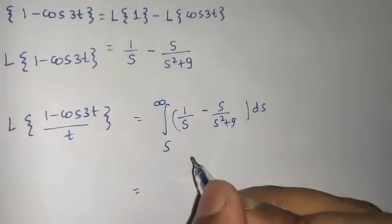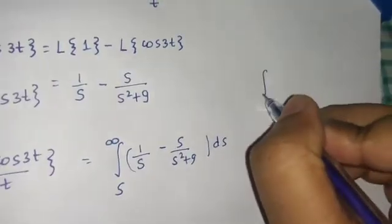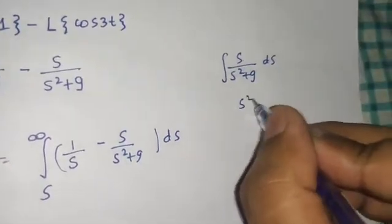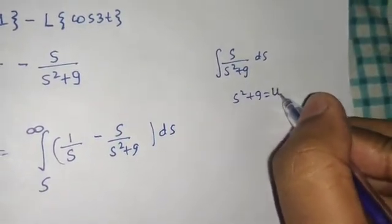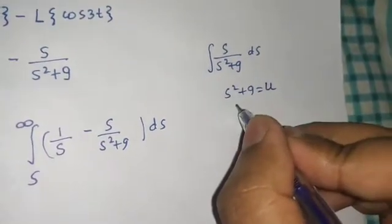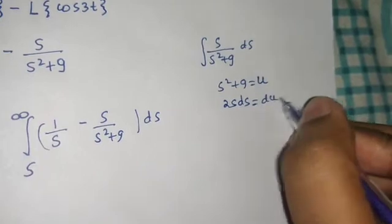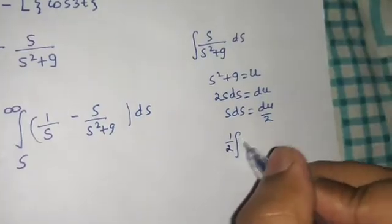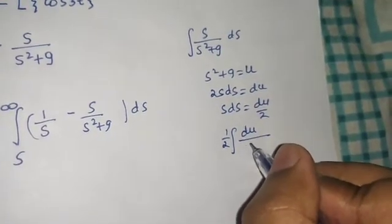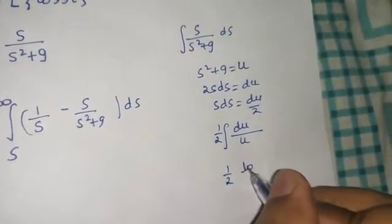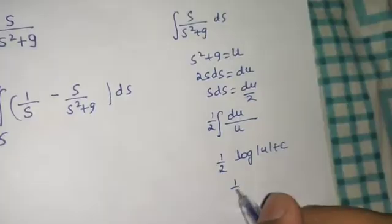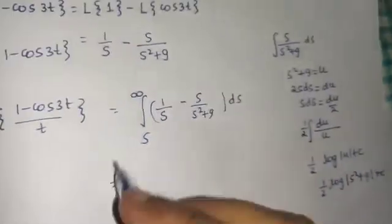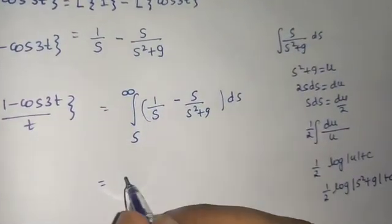Now let's look at the integral: the integral of s divided by (s² plus 9) ds. If we take s² plus 9 as u, then 2s ds becomes du, so ds becomes du/2. The integral becomes (1/2) times the integral of 1/u, giving (1/2) ln|u| plus c, which is (1/2) ln(s² plus 9) plus c. We already know the integral of 1/s is ln(s).